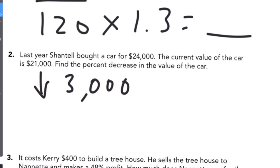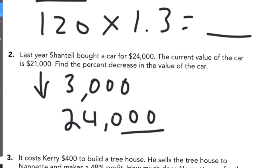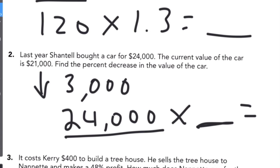So I look at the $3,000 and I need to figure out the percent decrease. I'm going to write a little equation: 24,000, which is the original price, times the percent decrease equals the decrease, which is 3,000. I'll put a variable there for the percent because I don't know what it is. Since we're multiplying by the variable, we're going to divide to solve for it, and that will give you the percent decrease.